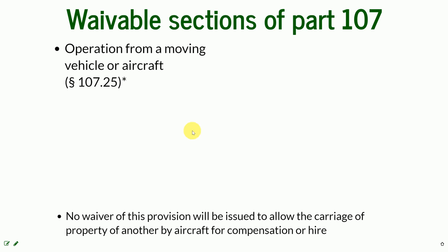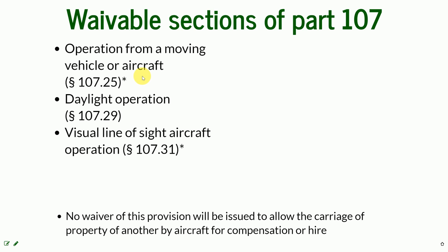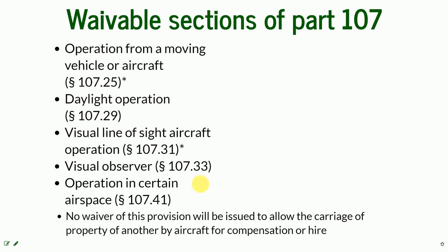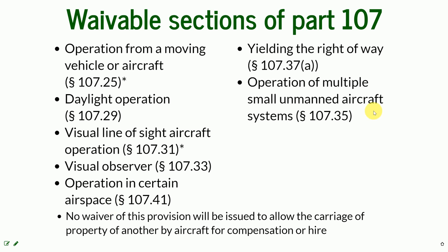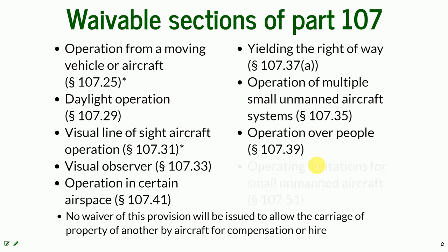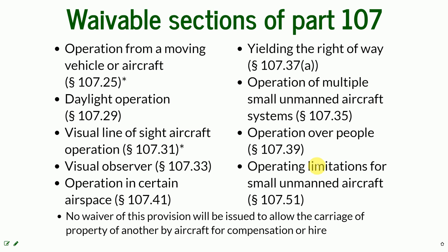The FAA will grant waivers that can be performed safely but would otherwise not be allowed under Part 107. There are only certain sections of Part 107 that are waivable: operation from a moving vehicle, daylight operations, visual line of sight aircraft operations, the visual observer requirement, operation in certain airspace, yielding the right of way, and operation of multiple small unmanned aircraft systems — because the regular rule in Part 107 is one pilot for one UAS.